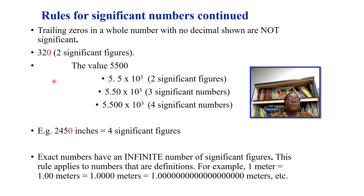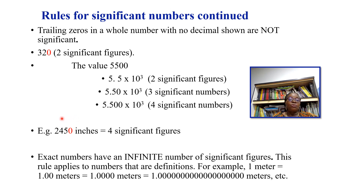For example, the value 5500 can have two, three, or four significant figures depending on how it is written. Written as 5.5 × 10³ it has two significant figures; written as 5.50 × 10³ it has three significant figures; written as 5.500 × 10³ it has four significant figures.